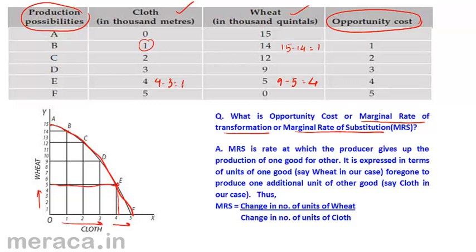If we are at point E, we see that the producer is producing five units of wheat. But when he was at point D, he was producing nine units. So how do we calculate this? The earlier possibility minus the new possibility — the units produced at the earlier possibility minus the units produced currently at the new possibility. It is expressed in terms of units of one good — wheat in our example — forgone to produce one additional unit of another good, which is cloth in our example.